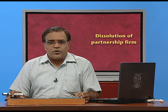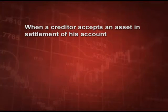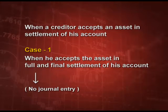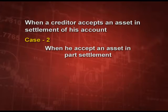Now, before moving on to the questions, let us discuss some very important adjustments. Adjustment number 1: when a creditor accepts an asset in settlement of his account — suppose we have to pay something to a particular person and we ask him to take an asset. There are two cases. Case number 1: when he accepts the asset in full and final settlement of account, no journal entry is required, because the creditor is taking the asset, so the asset will not be realized and the creditor will not be paid.